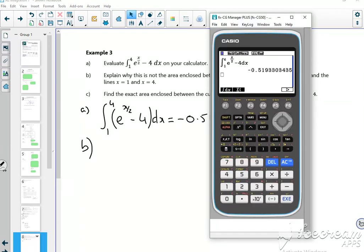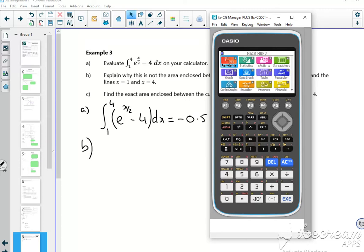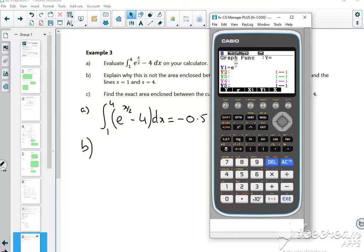So let's just nip back to our calculator and graph it. Menu 5, get rid of that. So shift E power x over 2, press right twice, minus 4. I've just changed my axes a bit. I want between 1 and 4, so if I plot it between 0 and 5, let's see what that looks like. There you go.